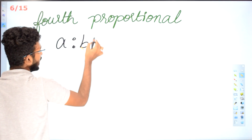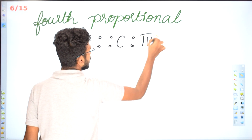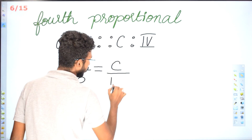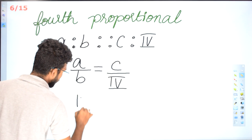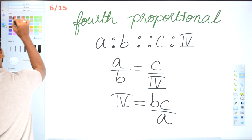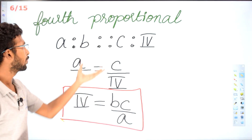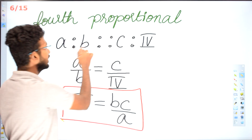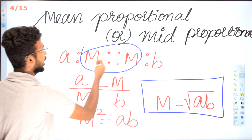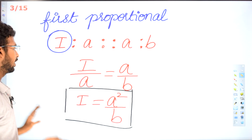A ratio B proportion C ratio fourth. From this, AB is equal to C times fourth, so fourth proportion is equal to BC divided by A. Also: M squared equals AB, and A squared divided by B is the first proportion formula.